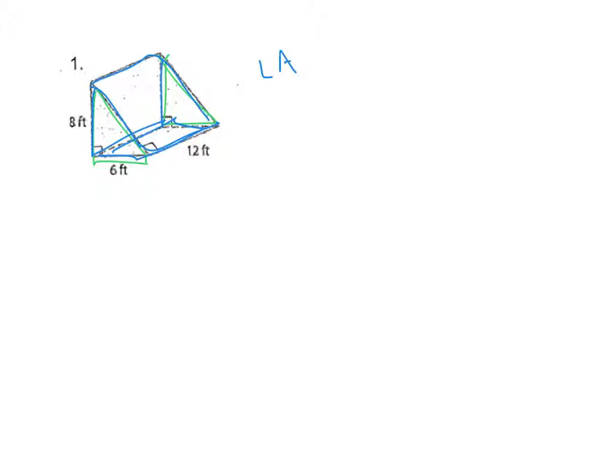I'm going to find lateral area and total surface area. We're just adding up the areas of the surfaces, totally applying what we know about area. Let's write down what we're getting for lateral area - the three rectangles. We've got 6 times 12, plus 8 times 12, plus, uh oh, I don't know this length. It's something times 12.